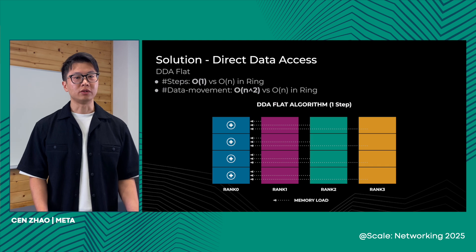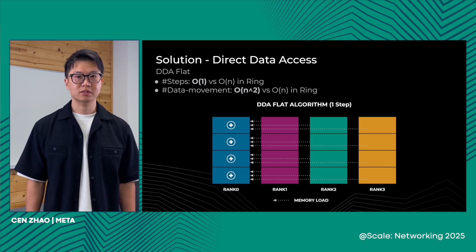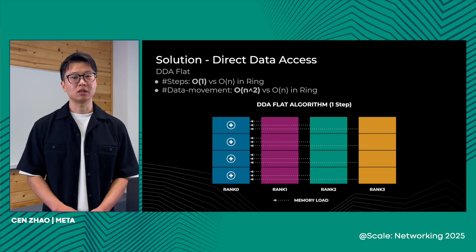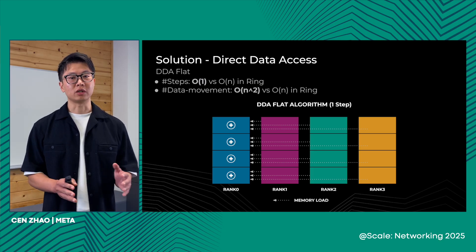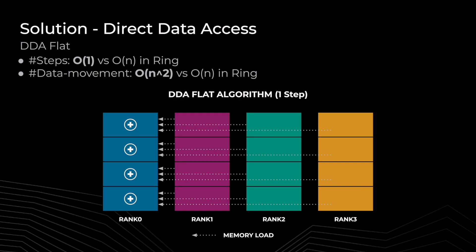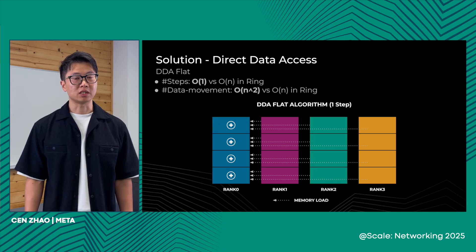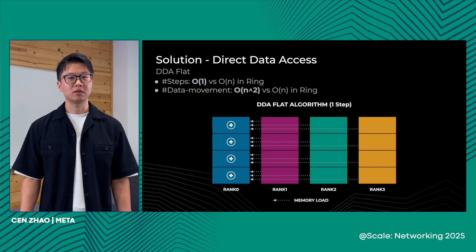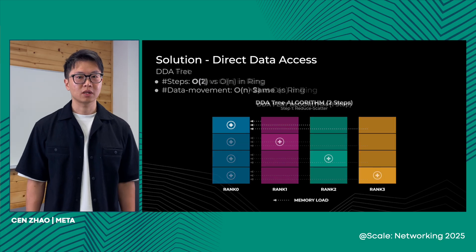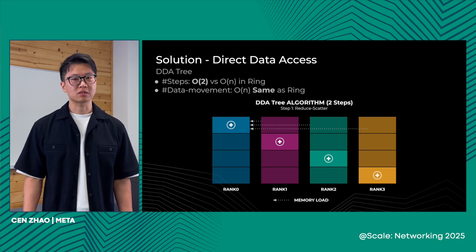We introduce a new algorithm called Direct Data Access, or DDA for short. Unlike the ring algorithm, where we reduce data in O(n) steps that scale with the number of ranks, with DDA we reduce all data in one shot. Rank zero fetches data directly from every other rank and performs a reduction locally. This significantly reduces latency by paying the cost of moving more data — specifically n² data compared to O(n) in ring. Since the data size is pretty small, the extra data movement doesn't cost much.